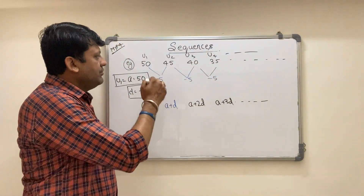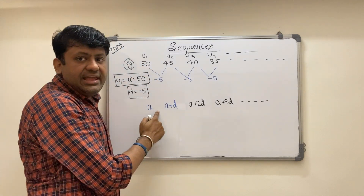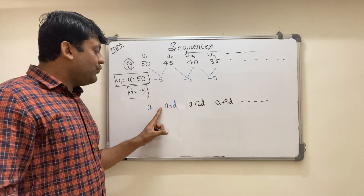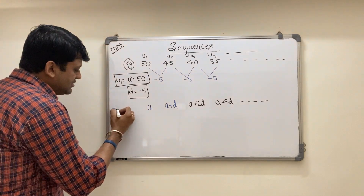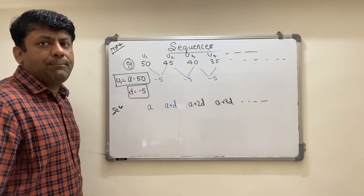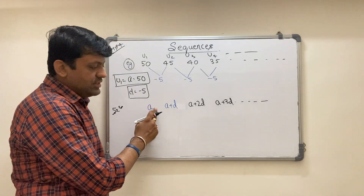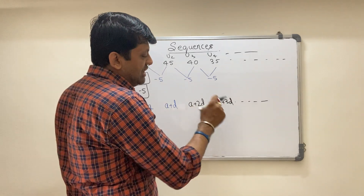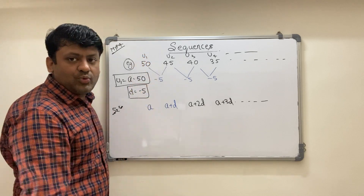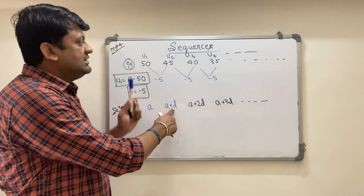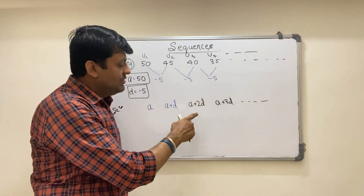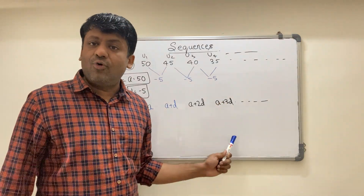Look at the pattern carefully. The first term is 'a', which we can also write as a plus 0·d. The second term is a plus 1·d. The third term is a plus 2·d. The fourth term is a plus 3·d. The coefficient of d follows the pattern: for the first term it is 1 minus 1 = 0, for the second term it is 2 minus 1 = 1, for the third term it is 3 minus 1 = 2, for the fourth term it is 4 minus 1 = 3.